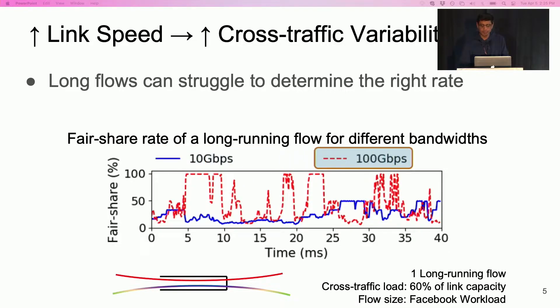As we increase the link speed, the cross traffic flows arrive and depart quickly. Because of higher churn in cross traffic, the fair share rate of the long running flow changes more rapidly and congestion control becomes more challenging.